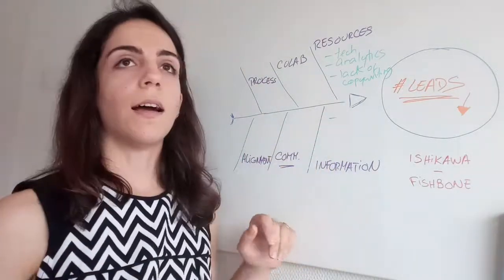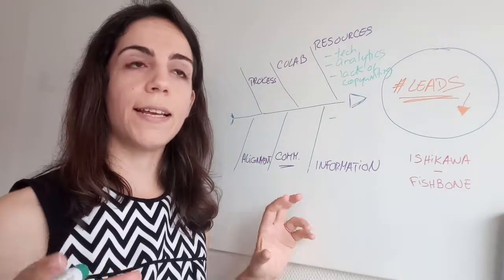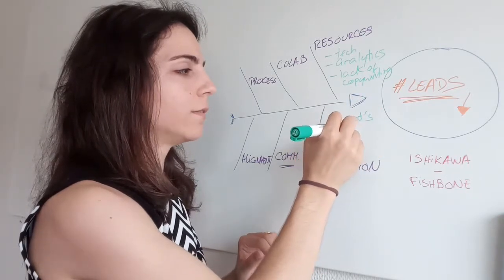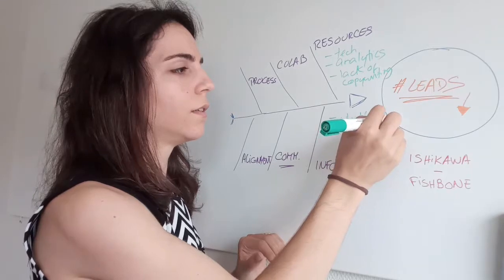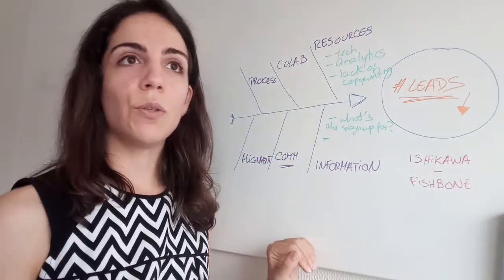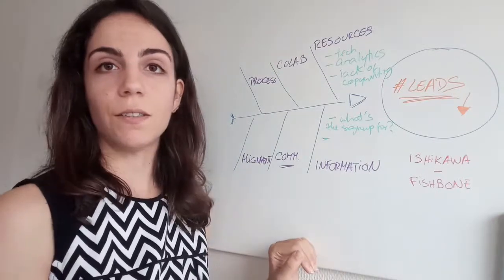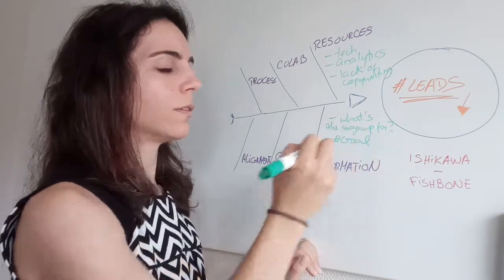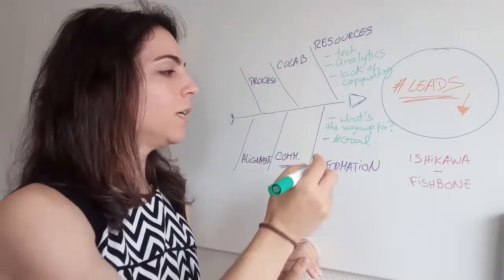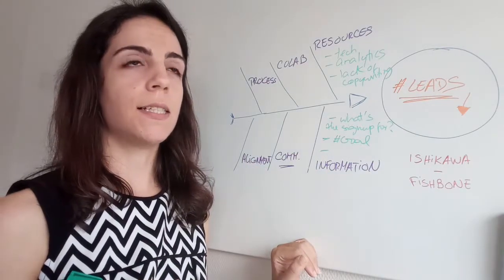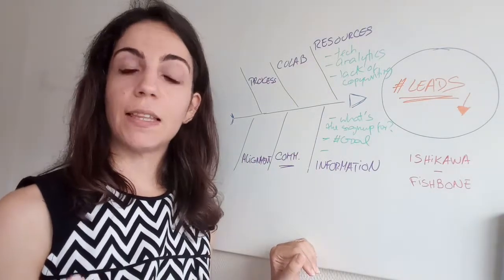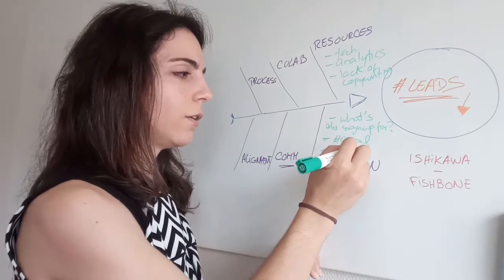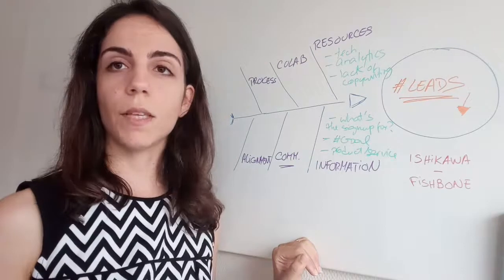In information, maybe you're not really sure about what is it that they should sign up for. So what's the sign up for? Maybe you don't have the information of how many leads you should be converting to, so number goal. Maybe you don't know what is the goal number. Maybe there is some kind of specific things about your product or service that you don't have the information about. So these are some examples.